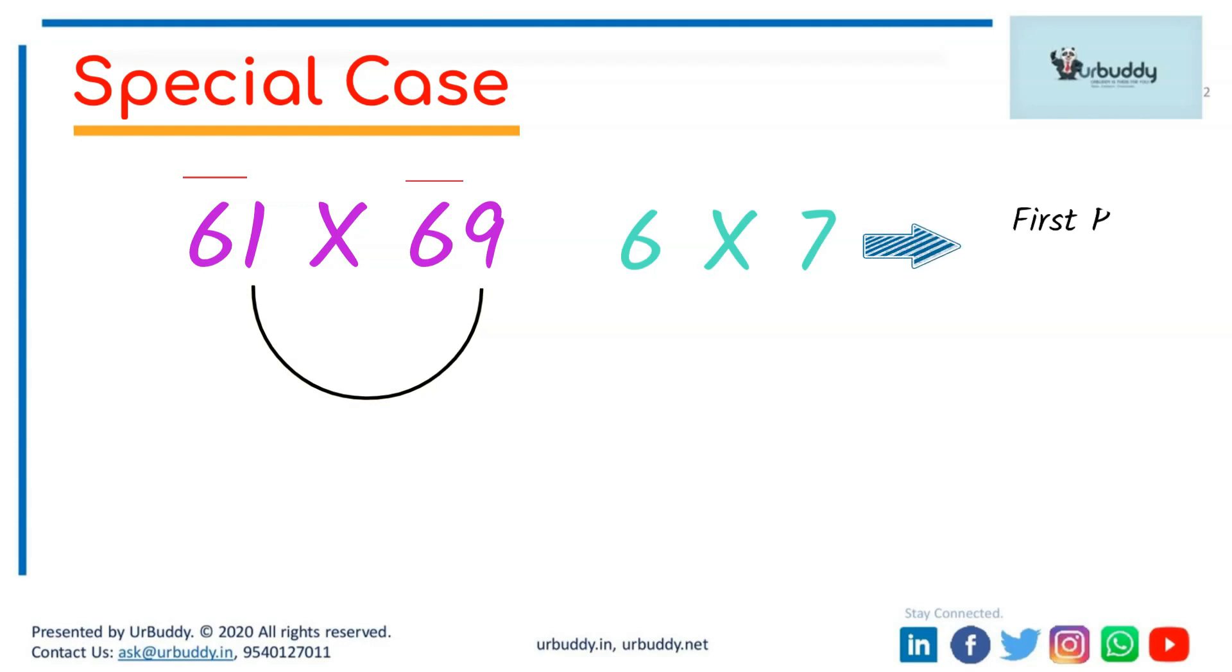So 6 multiplied by 7 to get the first part of the answer, 42. And 1 multiplied by 9 to get the second part of the answer, that will be 9. No, if you write 9, you will be making a mistake.